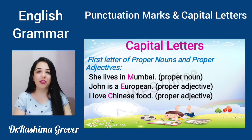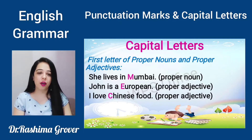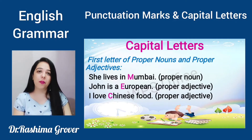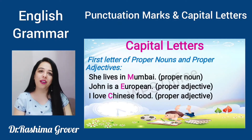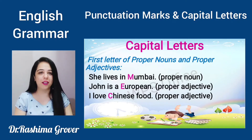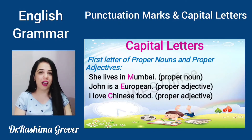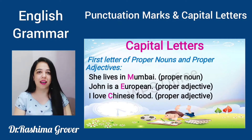Likewise, 'John is a European.' Now European is a proper adjective. Proper adjective kya hote hain? Jo adjectives proper noun se bante hain, unhe hum proper adjectives kehte hain. Because Europe is a noun, aur jab humne banaya European, it becomes a proper adjective. Toh proper adjective jahan par bhi likhenge, vo bhi hamesha capital letter se begin hoga. Like American, Indian — these are all proper adjectives. Similarly, 'I love Chinese food.' Chinese is again a proper adjective, isliye Chinese ka C bhi hamesha capital likha jayega.